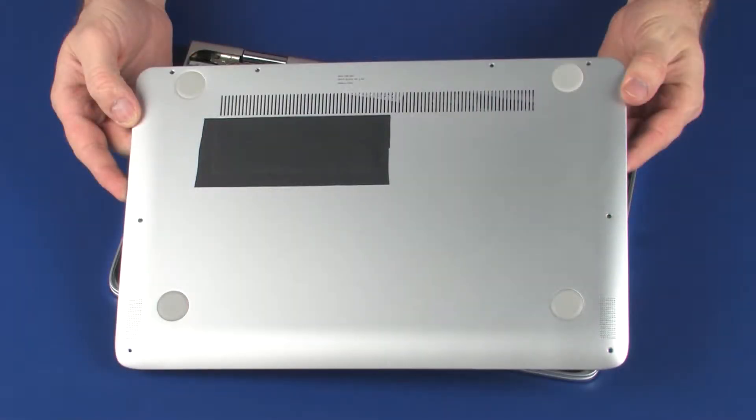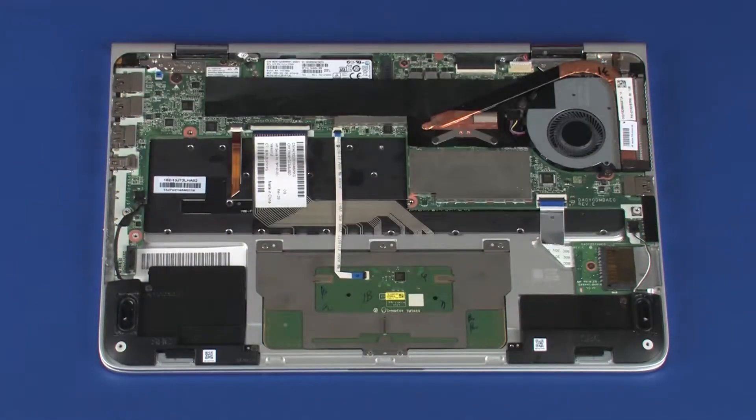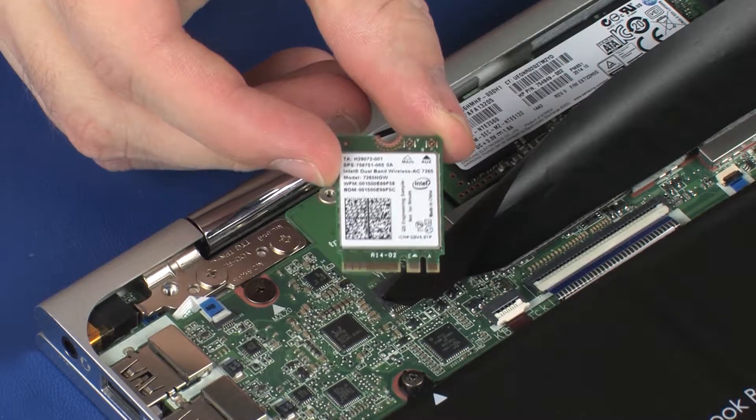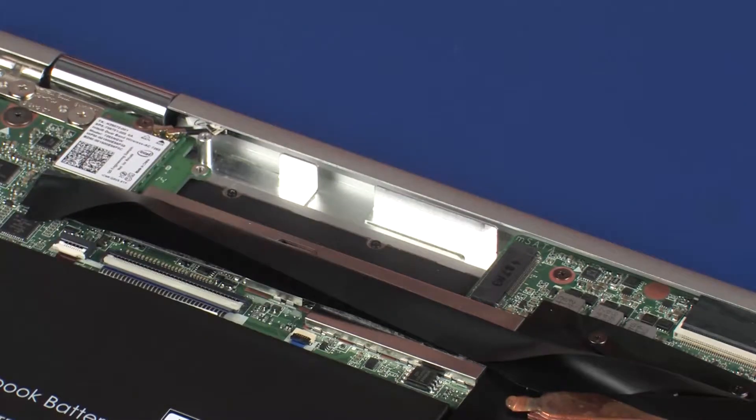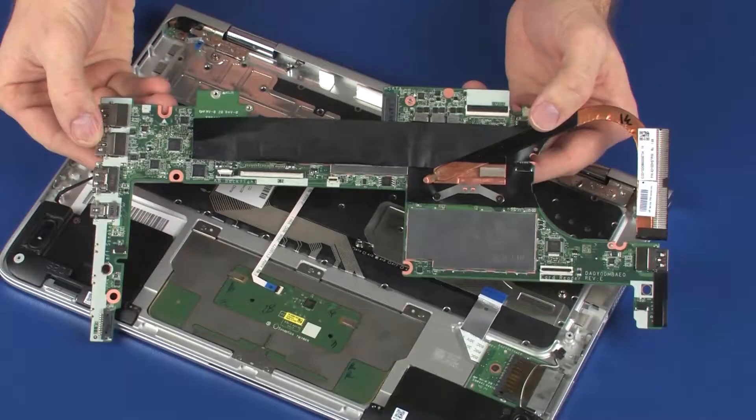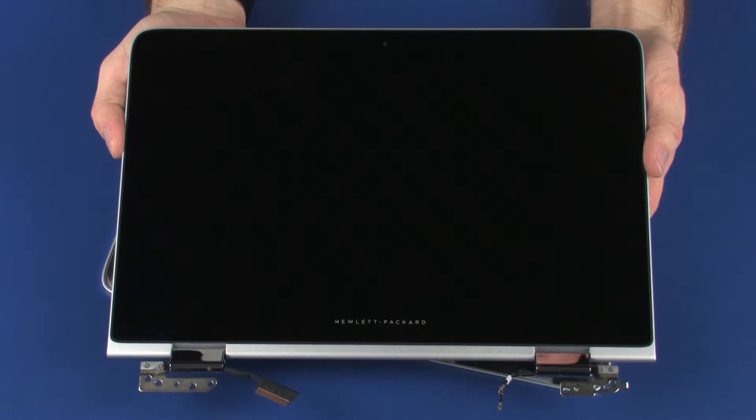Before you begin, remove the base enclosure, battery, wireless module, solid state drive, fan, system board, and display panel assembly.